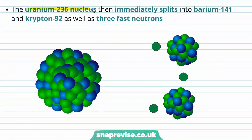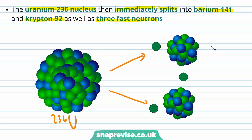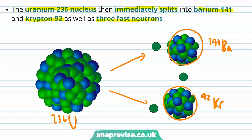The uranium-236 nucleus then immediately splits into barium-141 and krypton-92 as well as three fast neutrons. Because it's highly unstable, it immediately splits into two smaller nuclei: barium-141 and krypton-92. This process also produces three fast-moving neutrons.